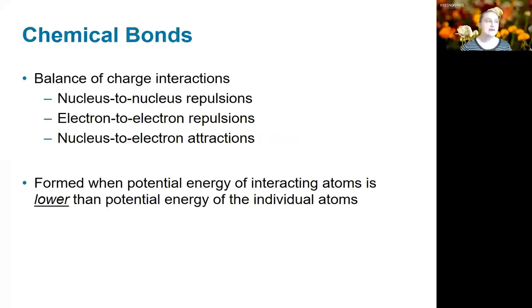Before we get started, just what is a chemical bond? A chemical bond is really the balance of charge interactions that occur between different atoms. We have nucleus-nucleus repulsions, electron-electron repulsions, and electron-nuclear attractions. A bond is formed when the potential energy of the interacting atoms is lower than the potential energy of the atoms by themselves. Basically, a bond is just an energy lowering associated with two atoms coming together.